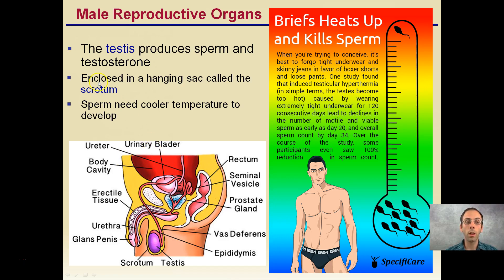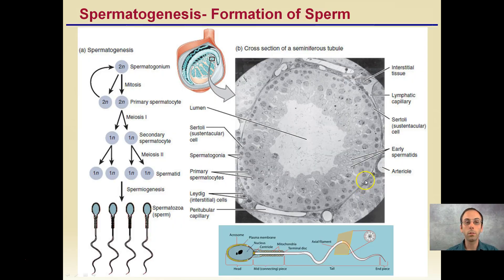Looking at the male reproductive organs: the testes produce sperm and testosterone, and they're enclosed in a hanging sack called the scrotum. The key point here is why they're located externally — sperm need cooler temperatures to develop. For males trying to conceive, it's typically suggested not to wear tight underwear or skinny jeans, but instead to favor boxer shorts and loose pants. This allows the scrotum and testes to hang outside the body and remain at a cooler temperature, increasing sperm survival and the chance of conception. That's spermatogenesis — the formation of sperm in the testes. We start with a diploid cell and ultimately produce four viable sperm cells.